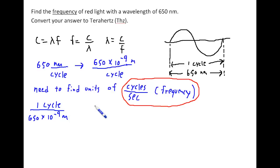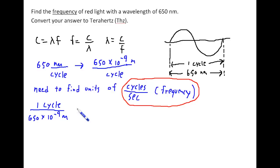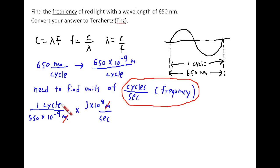We know that the unit we need doesn't have meters in it — it has cycles and seconds. It turns out we need something in units of meters per second to multiply by, which will give us the frequency. Meters per second is a unit of speed, so if we take this and multiply by 3 times 10 to the 8th meters per second — that's the speed of light — the meters cancel out and we end up with cycles per second.